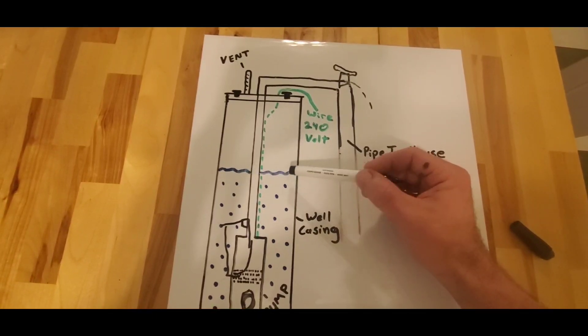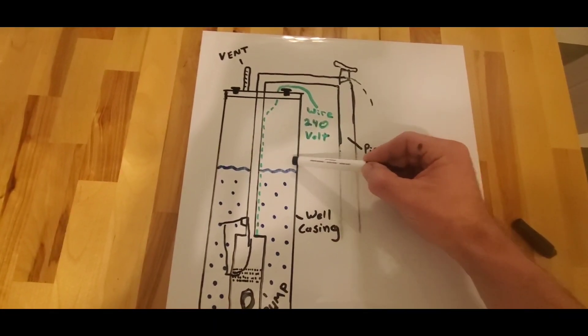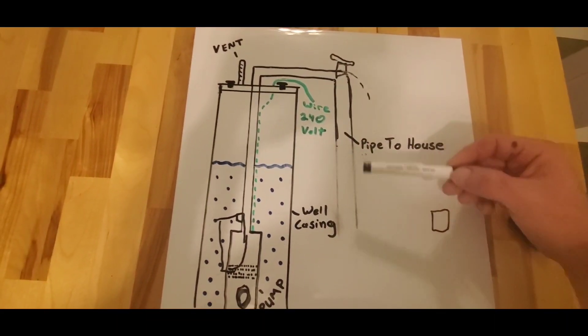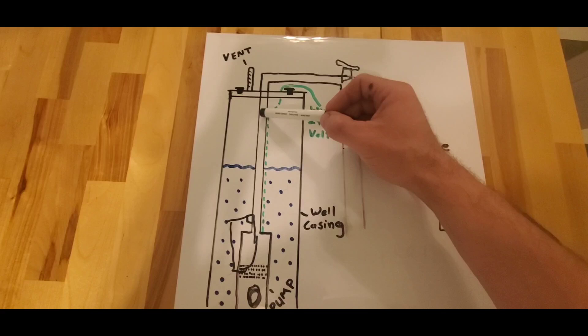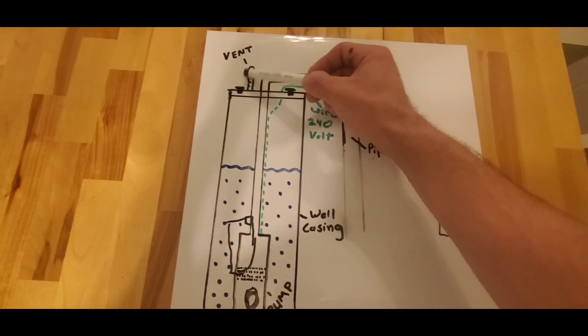Now if you're in another area, you might have a pitless adapter where the pitless adapter actually hooks up below the surface of the ground, so your drop pipe would actually come through the casing and then it would go to the house. Well, what's happening there is their drop pipes are freezing. The reason why the drop pipe is freezing is because of the vent.